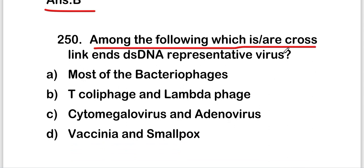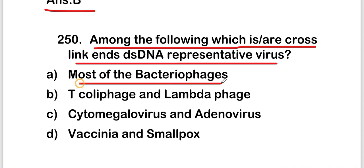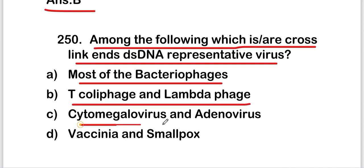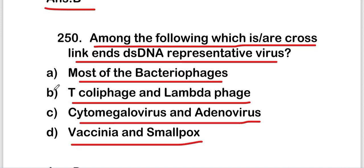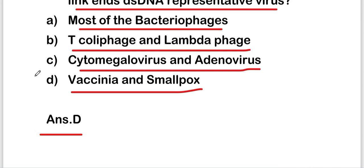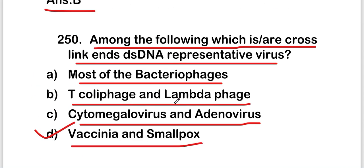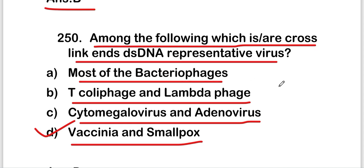The next question: among the following, which is or are cross-linked ends double-stranded DNA representative viruses? Options are most of the bacteriophages, T-coli phages and lambda phage, cytomegalovirus and adenovirus, or vaccinia and smallpox. The right answer is option D — vaccinia and smallpox are viruses with cross-linked ends double-stranded DNA.